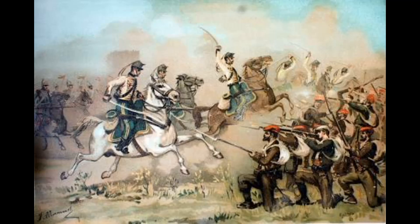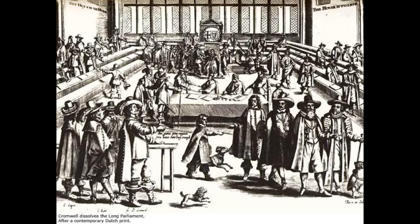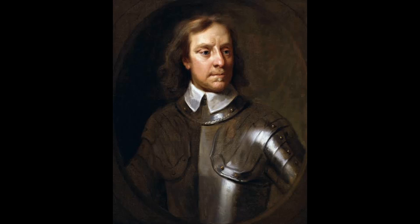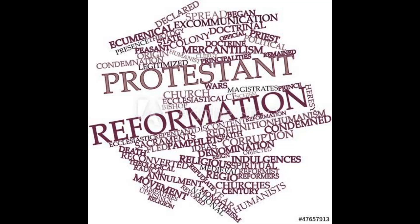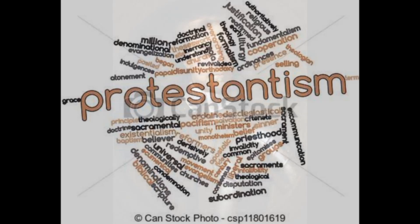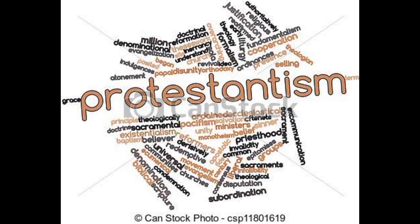After Queen Elizabeth's rule, James I succeeded and ruled for around 20 years. After that, his son Charles I assumed the throne. From the late 1620s onwards, Charles I had a rebellious relationship with the Church of England and the people of England. He levied many taxes and tried to bring in the system of divine rule, wherein he considered the king to be the supreme head of all decisions in England.